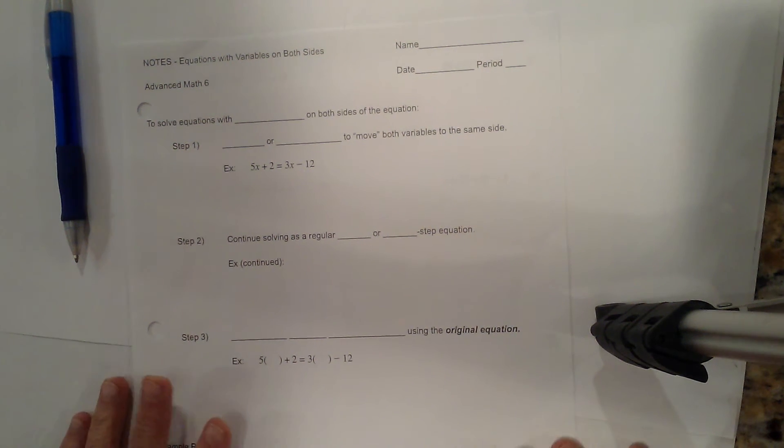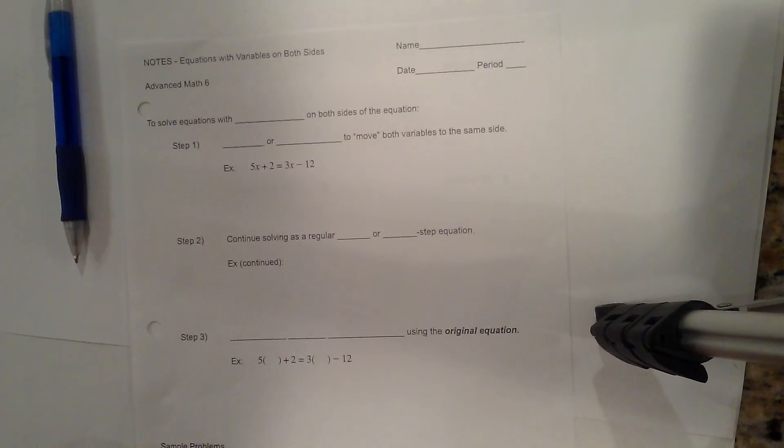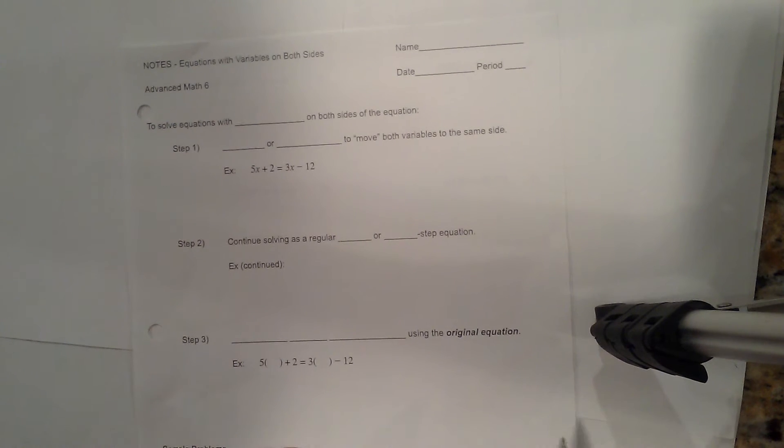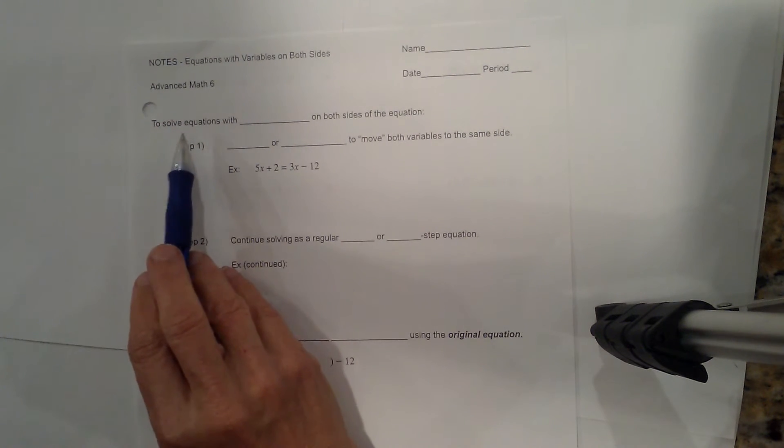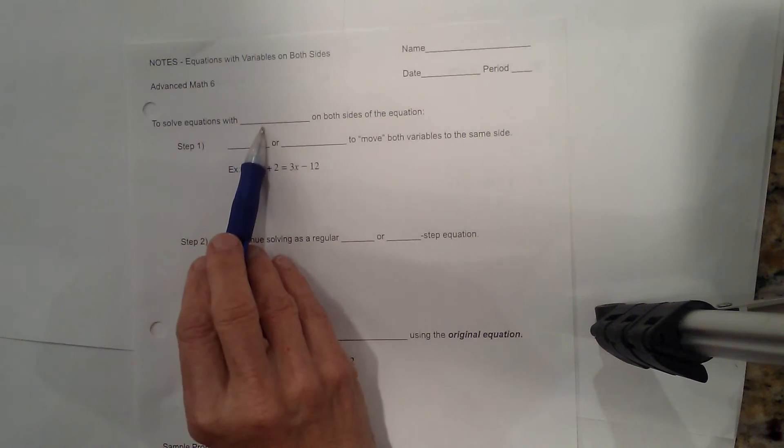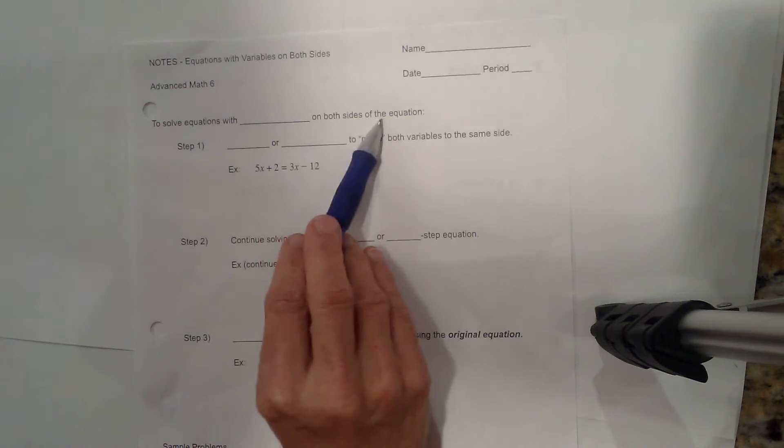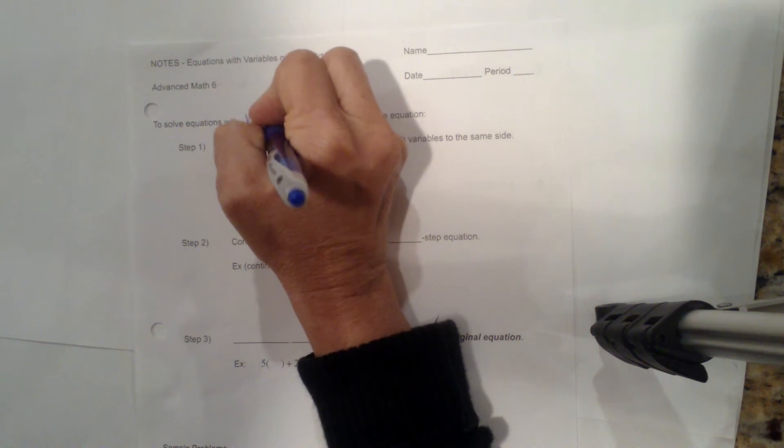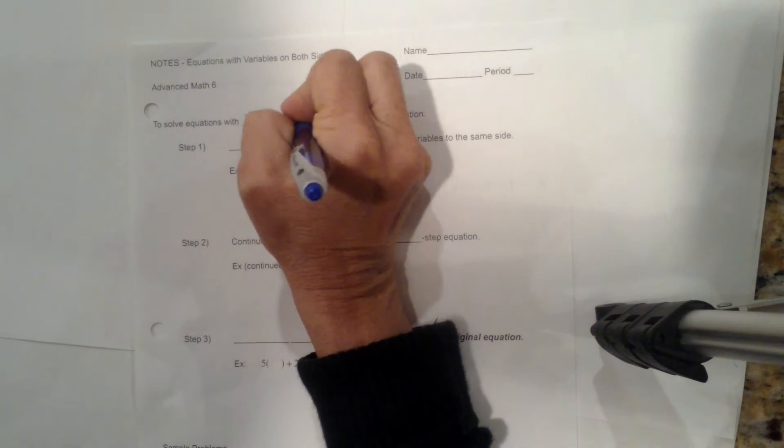Welcome to Moo Moo Math. Today we're going to look at solving two-step equations with variables on both sides of the equation. So we're going to look at solving with variables on both sides.